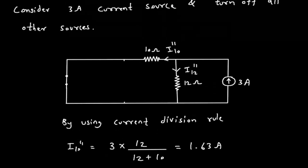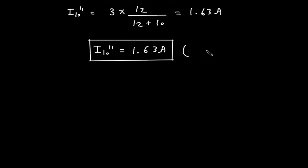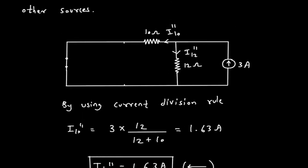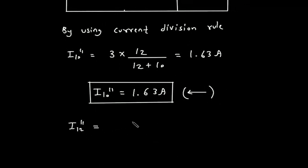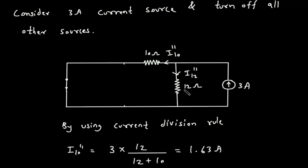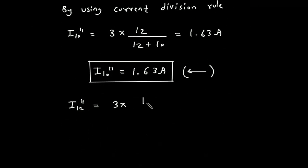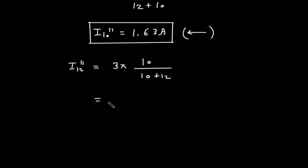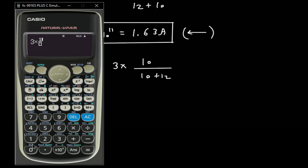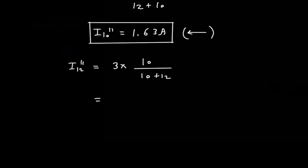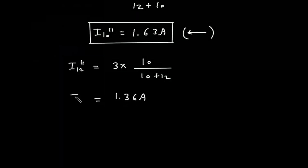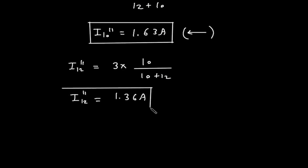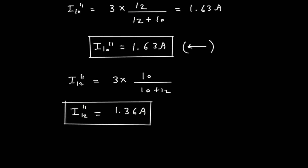The direction for I10 double prime is leftward. Applying current division rule for I12 double prime: I12 double prime = 3 × 10 divided by (10 + 12) = 1.36 ampere. The direction for I12 double prime is downward.